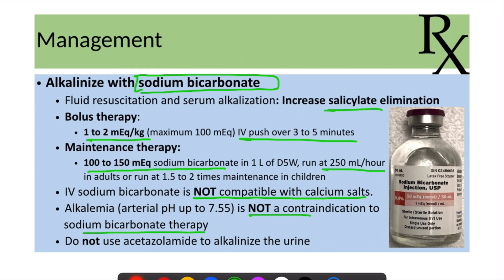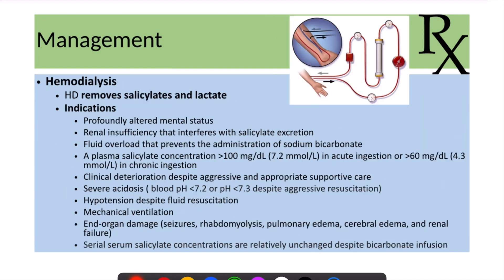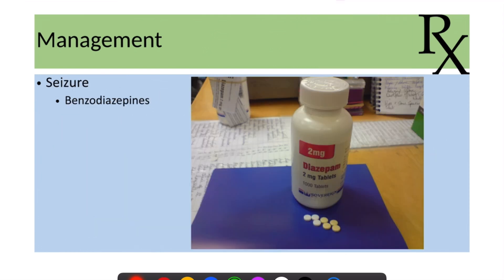Acetazolamide should not be used to alkalinize the urine in salicylate poisoning. The patient may also require hemodialysis, which removes salicylates and lactate. There are many indications for hemodialysis and it should be initiated when those criteria are met. Benzodiazepines can be used to treat seizures if they develop.